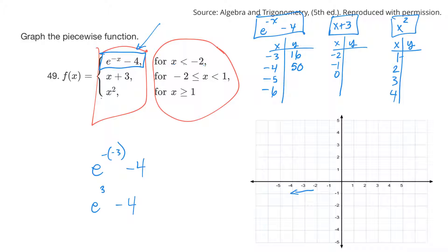So negative 3, it's 16. So I'll be way up here somewhere. My graph's not good. Why don't I make these 10, 20, 30, 40, and 50? So negative 3 is 16. That'd be about here. And negative 4 is 50. Negative 4, right about there.